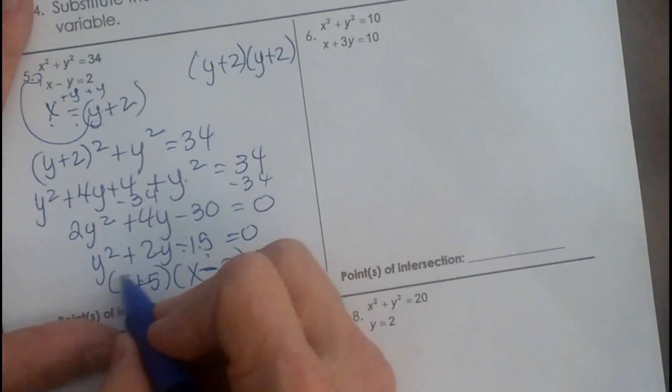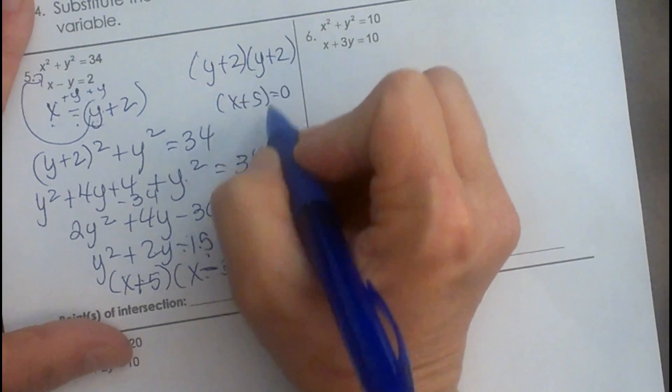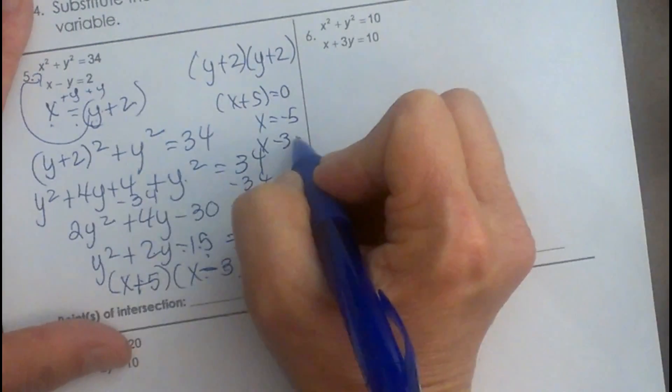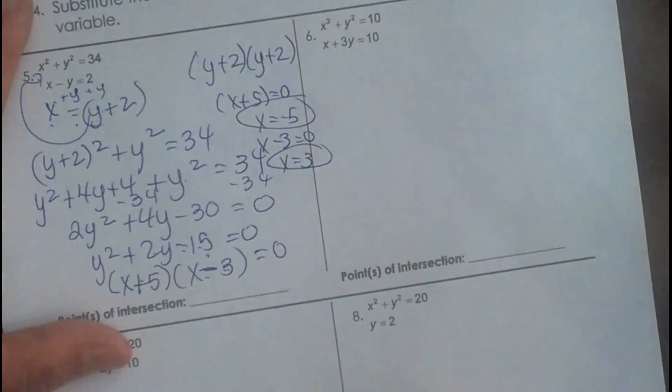Set these equal to 0. X plus 5 equals 0, so X is negative 5. X minus 3 equals 0, so X is positive 3. So there are my X values.